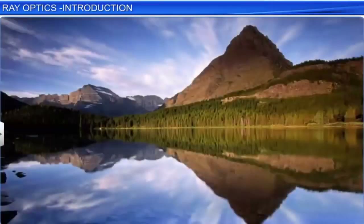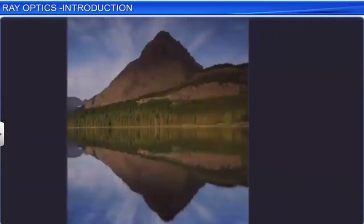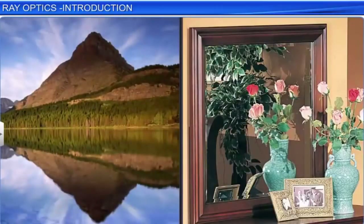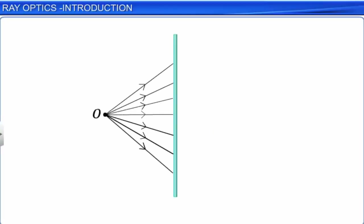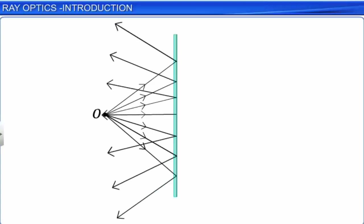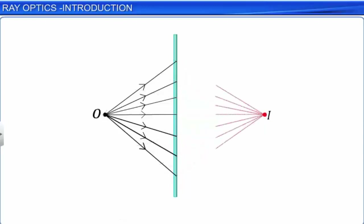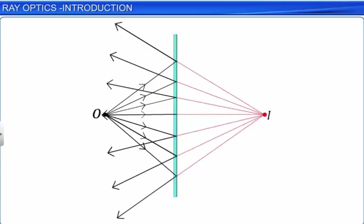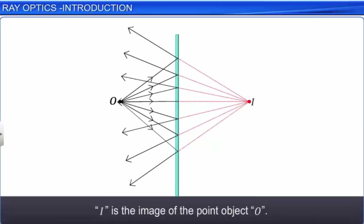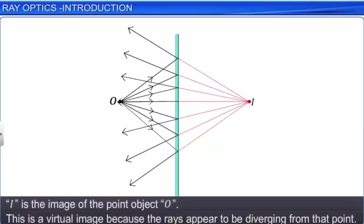We can see the image of hilltops on the smooth surface of water, like any image we see in a plane mirror. When a point object O is placed in front of a plane mirror, rays from the object after falling on the mirror get reflected and form a diverging beam. If these diverging rays are extended backward, they meet at a point i. The diverging beam of light appears to come out of a point i behind the mirror. This point i is the image of the point object O. This is a virtual image because after reflection the rays appear to be diverging from that point.